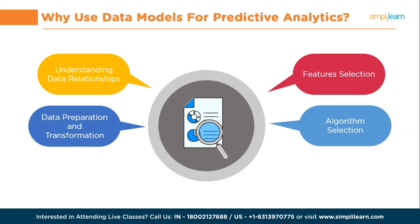Fifth, interpretability and transparency: data models provide a visual representation of data relationships, making them easier to understand and interpret. This is especially important for business stakeholders who need to comprehend the underlying factors driving predictions. A well-defined data model allows stakeholders to validate the model's assumptions, evaluate the impact of different variables on outcomes, and gain insights into the decision-making process. And finally, iterative development and improvement: predictive analytics is often an iterative process where models are built, evaluated, and refined multiple times. Data models facilitate this iterative development by organizing and documenting the data analysis process, enabling tracking of changes, documenting assumptions, and storing metadata related to data transformations and feature engineering — helping to continuously improve the predictive models.